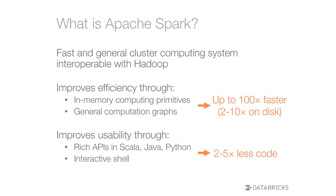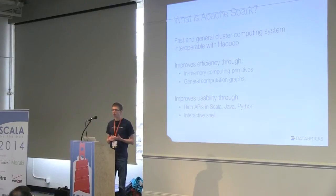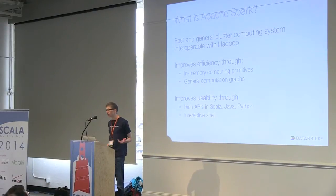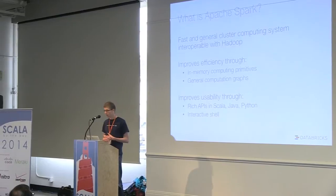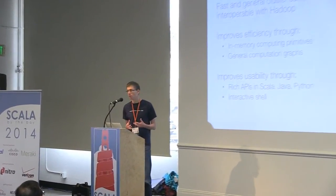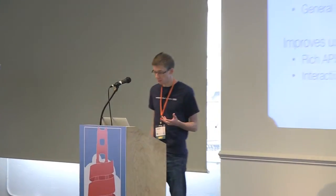So what is Spark? Overall, it's supposed to be a fast and general purpose cluster computing system that's compatible with Hadoop and the Hadoop ecosystem. It's supposed to provide a more powerful computation engine, and it does that in two ways. First, it improves efficiency over MapReduce by giving you the ability to do computing in memory and also giving you the ability to do general graphs of computations, not just map and reduce.